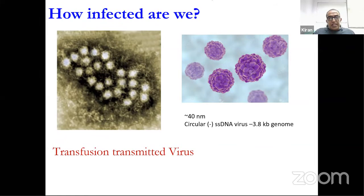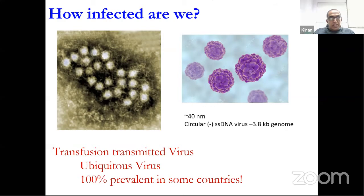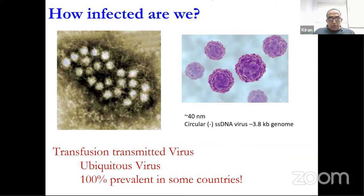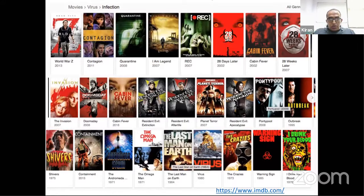One more notable virus is the transfusion transmitted virus (TTV), sometimes called the 'dark' virus. It is ubiquitous — in some Middle Eastern countries like Kuwait virtually every individual carries it in large numbers. It's a small virus, about 40 nanometers with a 3.8 kb genome. No one knows exactly what it does; it doesn't obviously harm individuals, though there are some associations with liver failure. Almost all living organisms — including whales — are infected with multiple virus types at any given time, mostly unnoticed thanks to our immune systems.